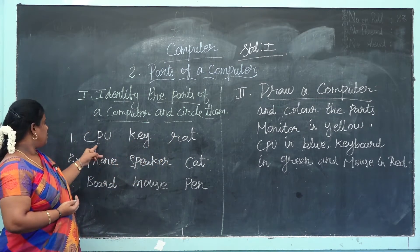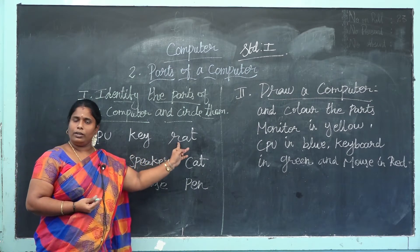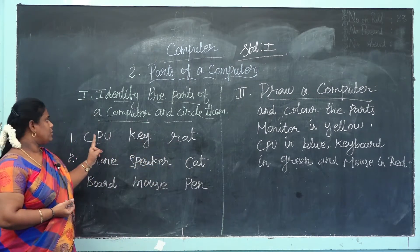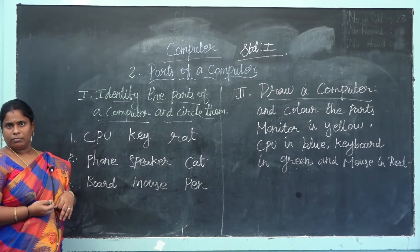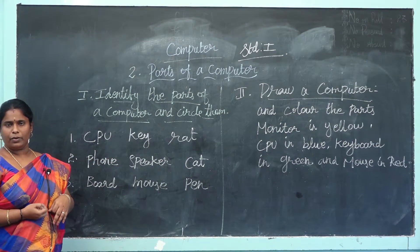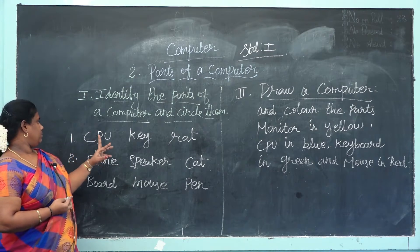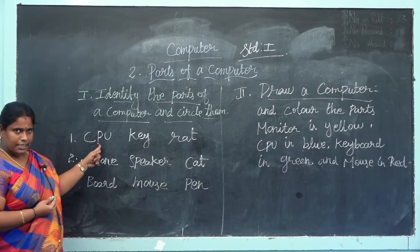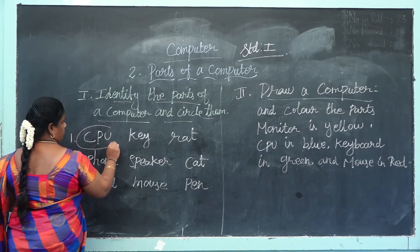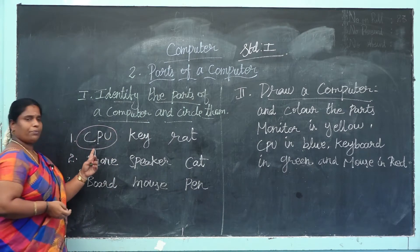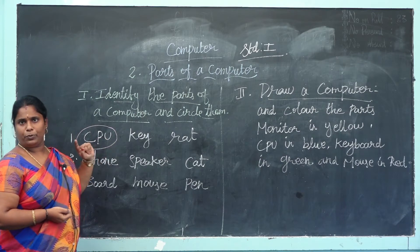First one: CPU, second one: key, third one: rad. Which one is a computer part? Do you identify? Yes — the correct answer is CPU. CPU is the main part of the computer. First one answer is CPU.